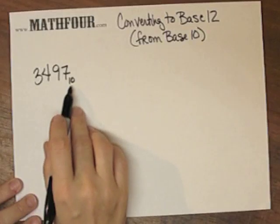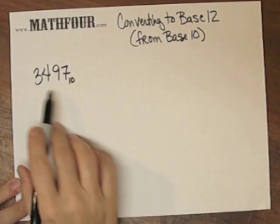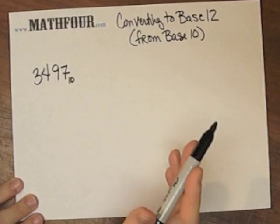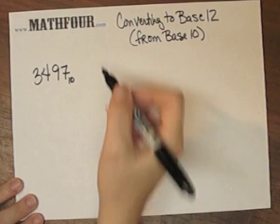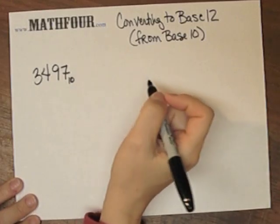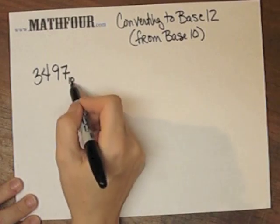Normally you don't have to do that when we're talking every day because we all, well barring some horrible accident, we all have 10 fingers, so we know we're talking about 3,497. What we need to do is figure out how to say this as if we had 12 fingers.